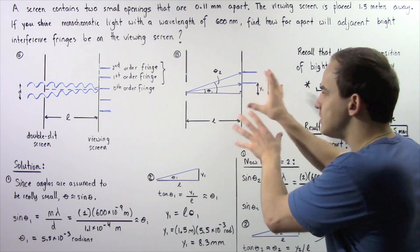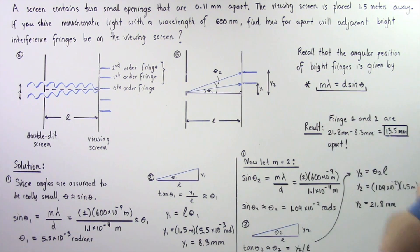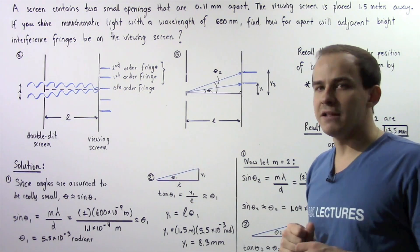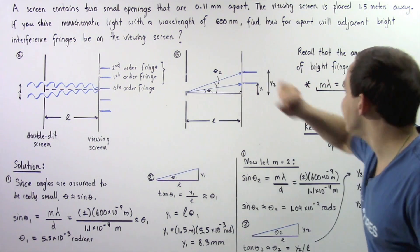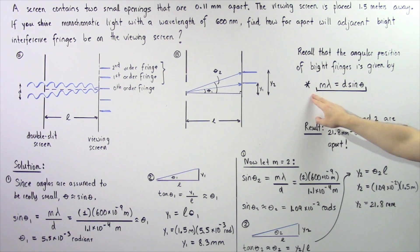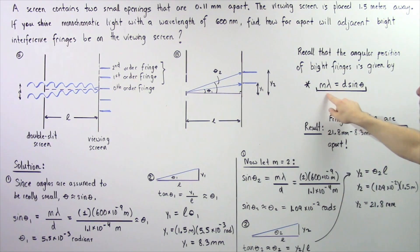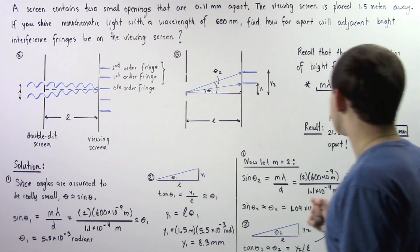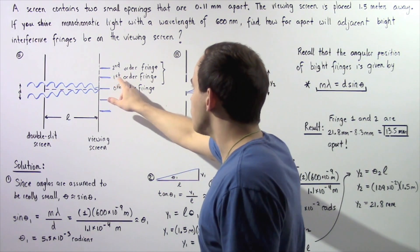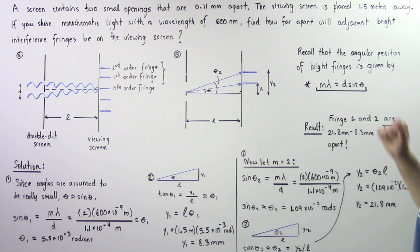We'll use these two right triangles to solve this problem. Recall the equation for the angular position of the bright fringes derived in the previous lecture: M multiplied by λ equals D multiplied by sine θ, where M is the order of the fringe. For the first order, M equals 1; for the second order, M equals 2.